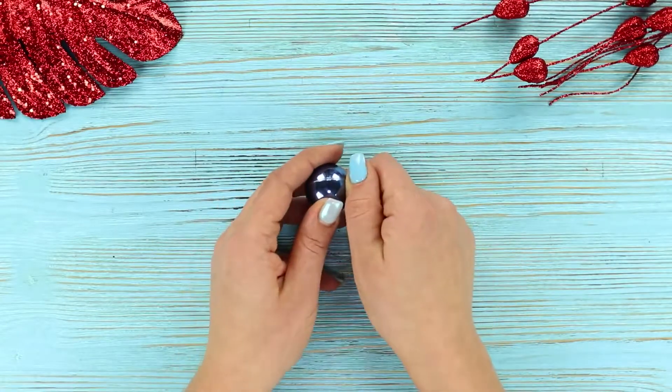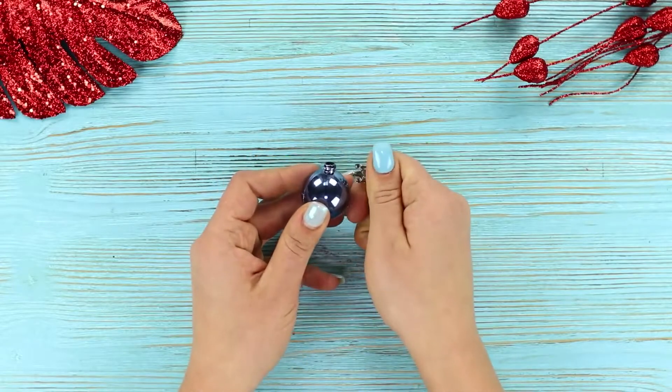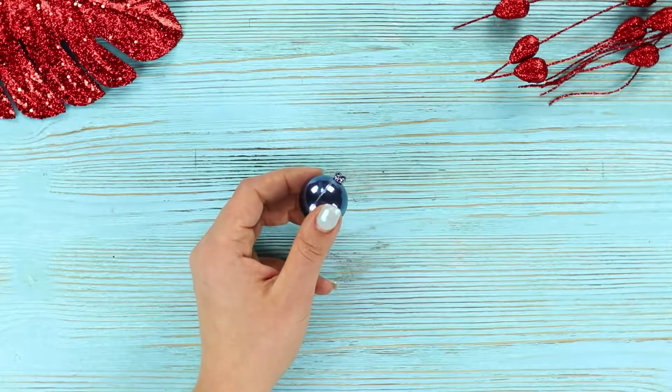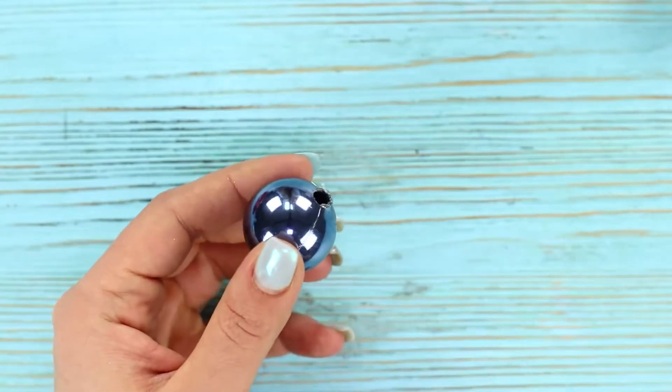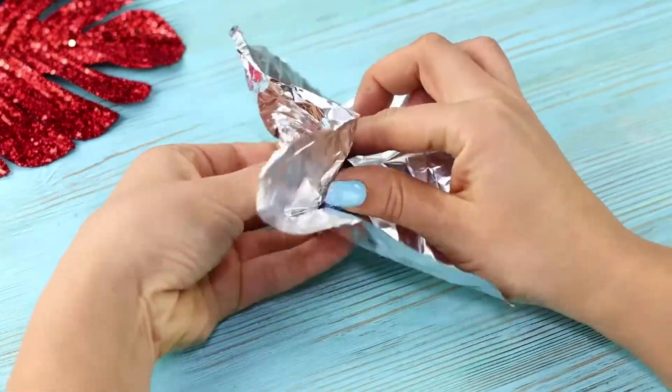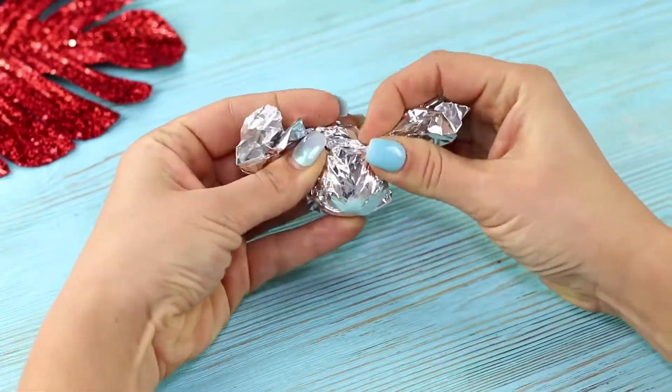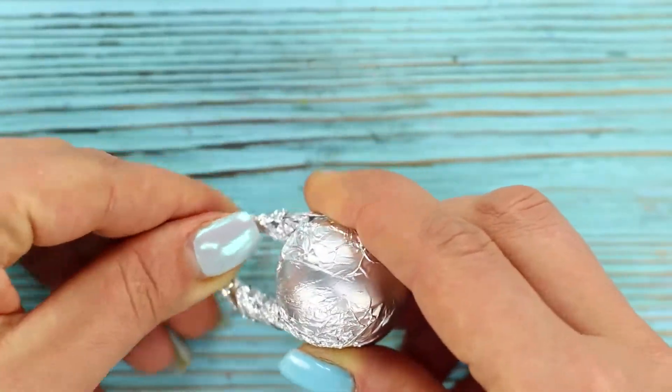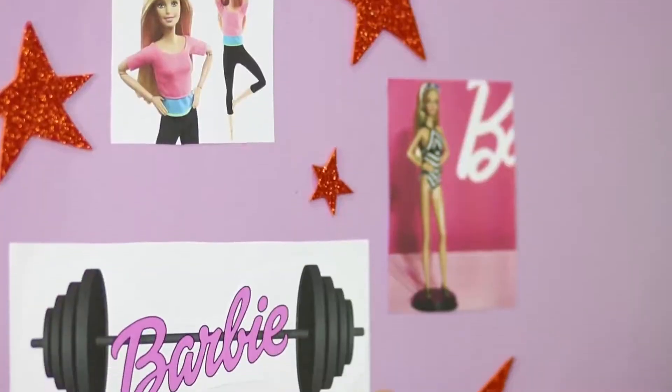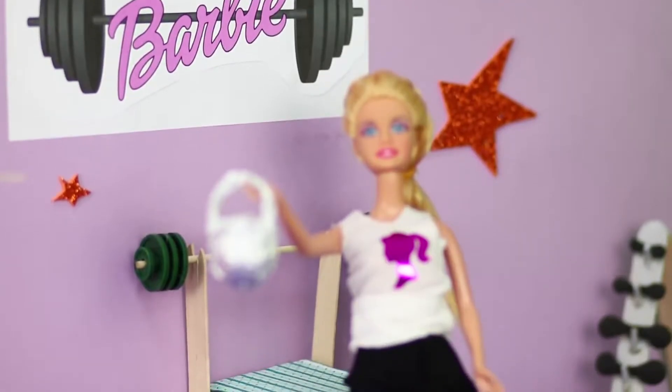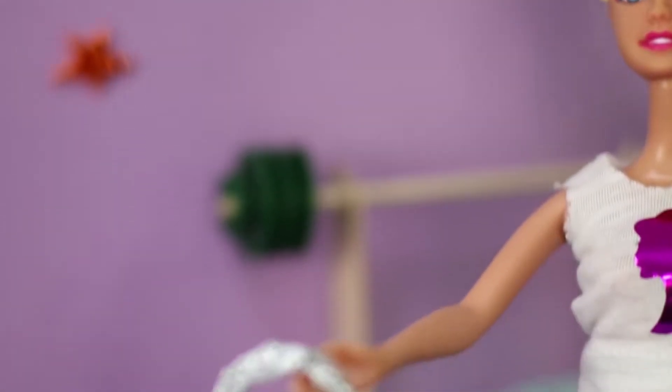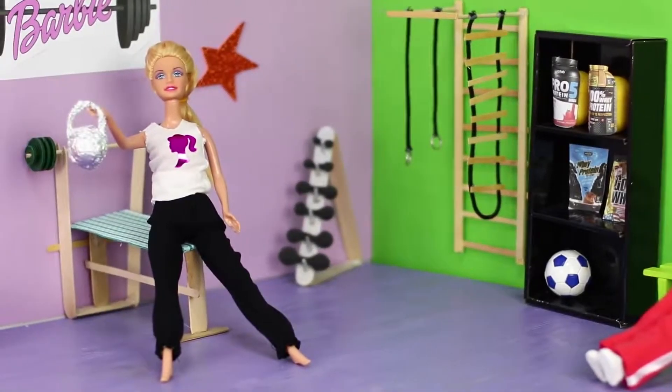And now we will tell you what you can make from a small Christmas ornament! Remove the holder from it and cut off the tip. Wrap it in foil. Make silvery tips and connect them together. You gotta wait for strength training! Now Barbie will have the strongest muscles in the class for sure!